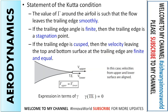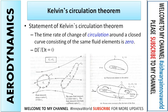The third condition: if the trailing edge is curved, the velocities leaving the top and bottom surfaces of the trailing edge are finite and equal. That means the velocity on the upper and lower surfaces will be the same, but they are not necessarily zero. The Kutta condition states that the vortices at the trailing edge are zero.